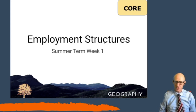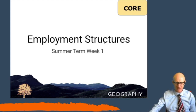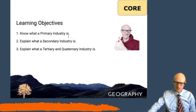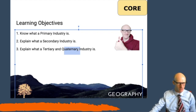We're starting a whole new topic on industry, thinking throughout the term about how people earn money, how industries work, and the different types of industries there are. There are basically four different types of industry: primary industry, secondary industry, tertiary industry, and quaternary industry — four different ways that all our jobs can fit into one of those four categories.